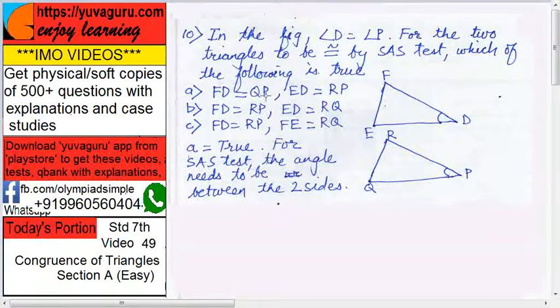Here, FD equals to QP. You might think that FD equals to RP should be given, but it is not the question always. You can have to think in reverse way also. FD equals to QP.